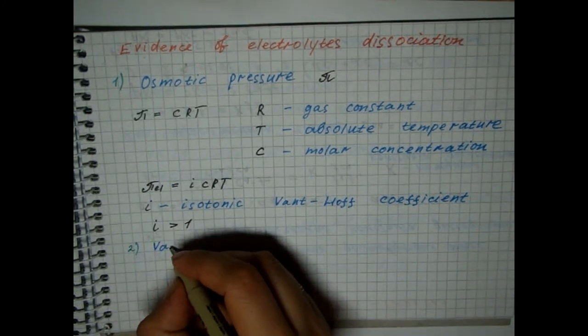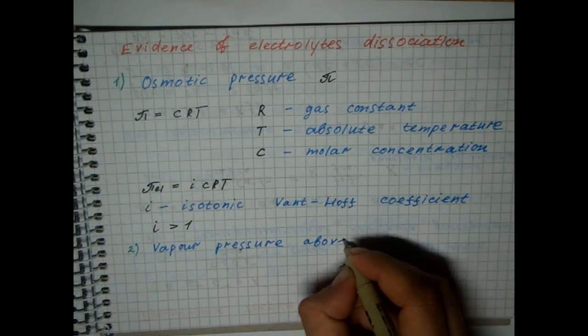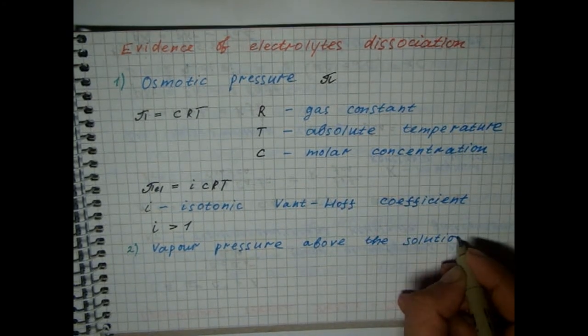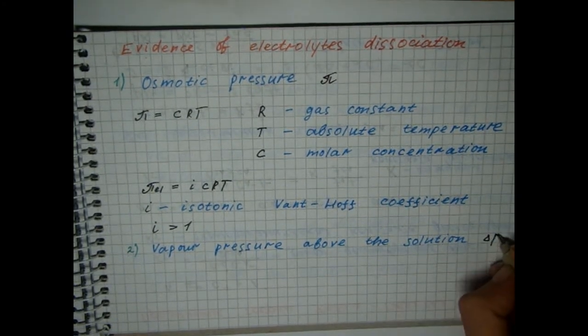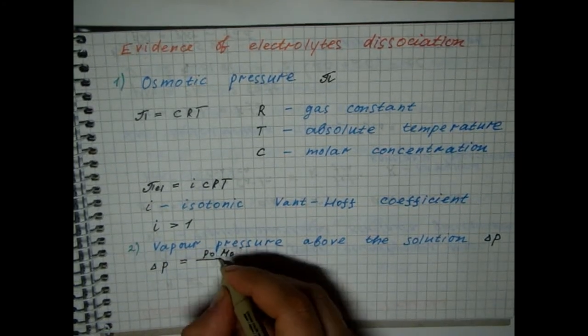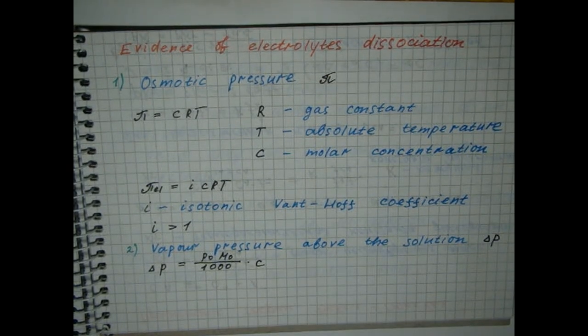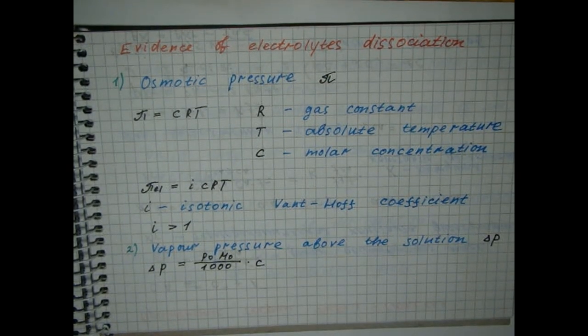The next experiment was related to vapor pressure above the solution. The dissolved substance reduces liquid vapor pressure above the solution in comparison with the pure solvent. In a highly diluted solution, it is calculated by the formula.